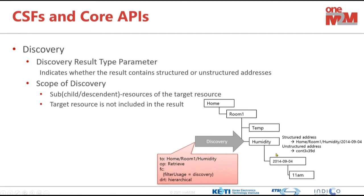When we say hierarchical — which is equivalent to structured address or structured resource identifier — this is a path-like ID format, just like a file path in Windows. We start from a root like C or D, then all the descendant directory names, and then the file name at the end. Similarly, oneM2M provides the structured resource identifier format — for example: home, room, humidity, date. As a shortcut, we also provide the unstructured resource identifier, which is given by the platform. The platform creates a resource and they are one-to-one mapping.